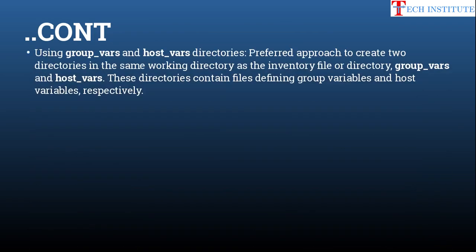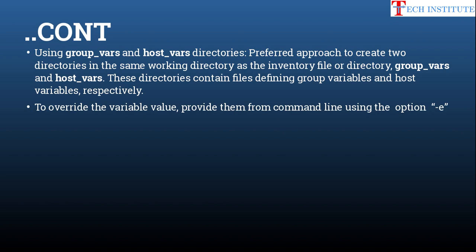When you have many variables, putting them all in the inventory file makes it cluttered and hard to maintain. Instead, you can create two directories — 'group_vars' and 'host_vars' — and define your group and host variables there. To override any of these variables at runtime, use the '-e' option when running 'ansible-playbook', like '-e user=3dbase', which takes the highest priority over variables defined in inventory or playbooks.